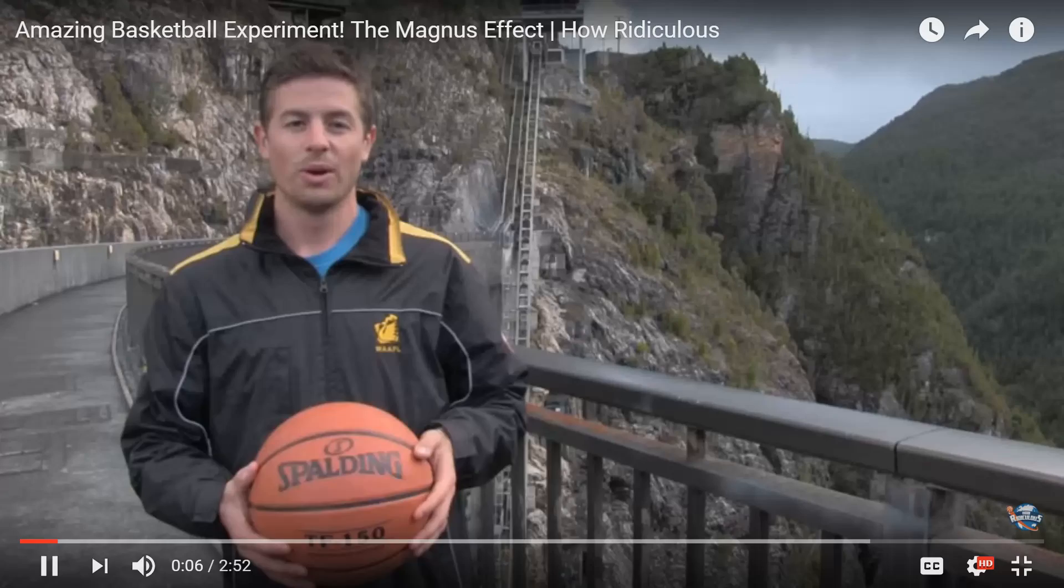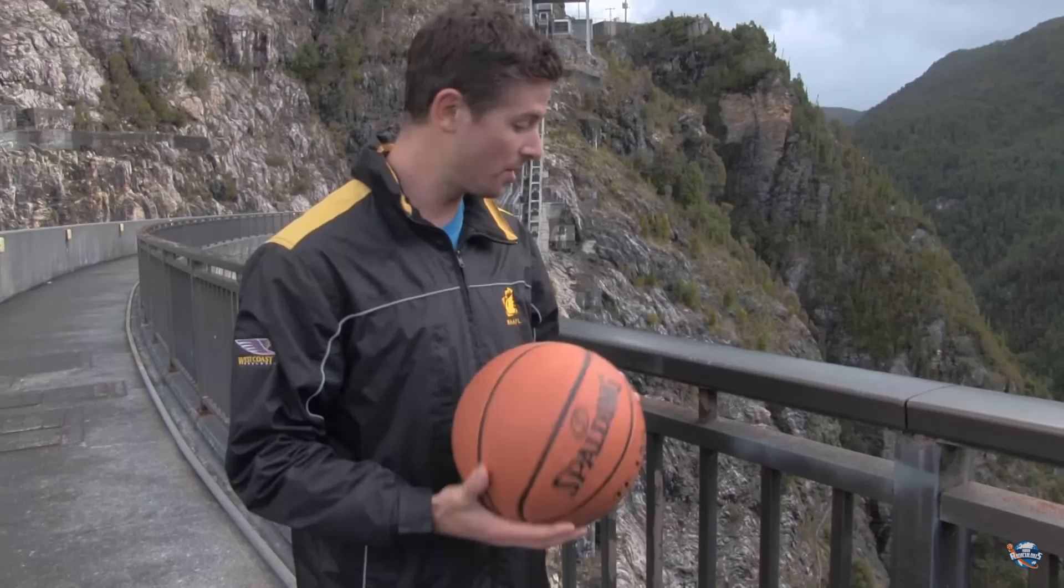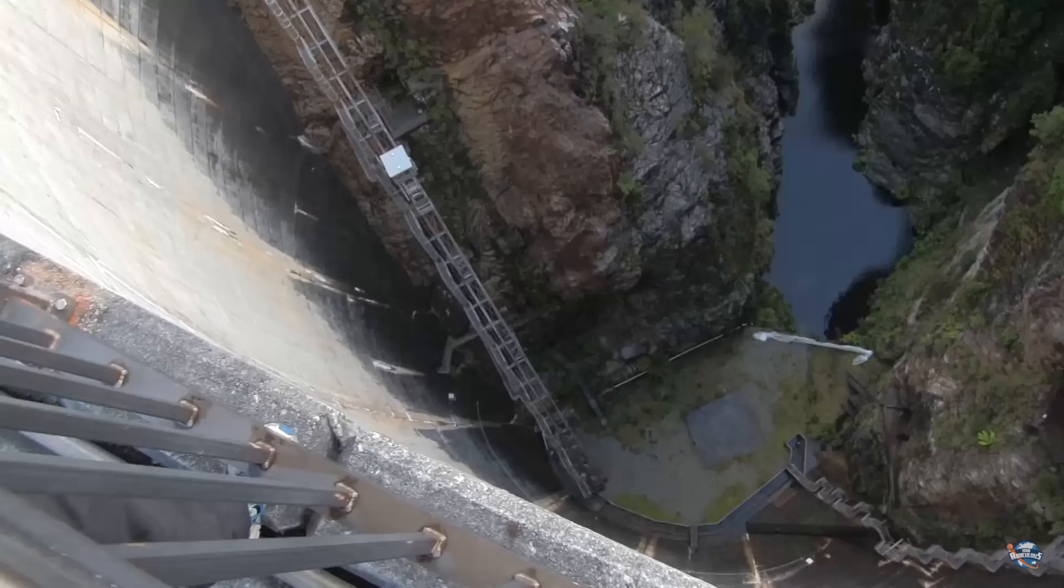We're here at the Gordon Dam, and what we're going to do is demonstrate from the very top the effect of spin on a ball. So we're going to get a basketball and drop it from 140 meters up, one without spin and one with spin, and see what happens. Alright, you're going to do it. Good job, John.